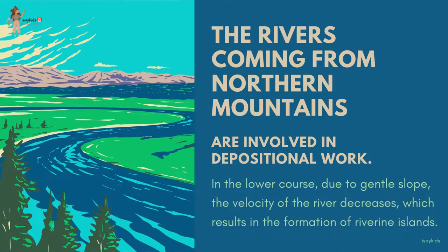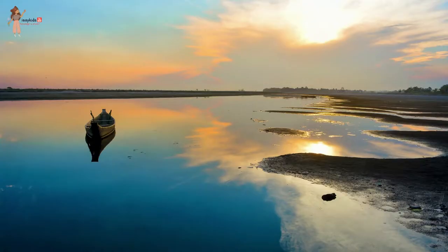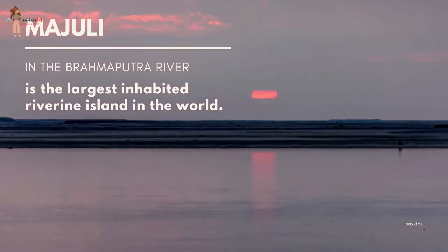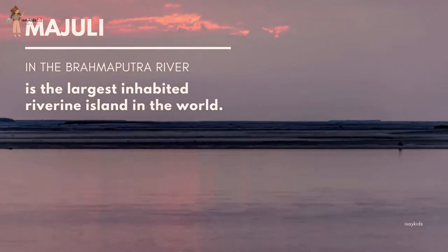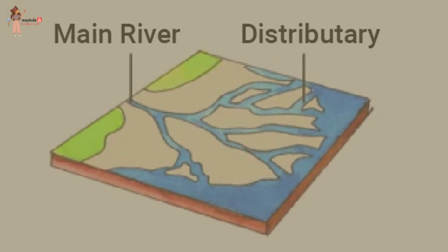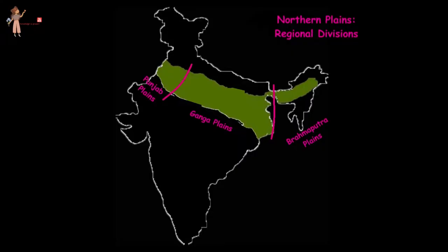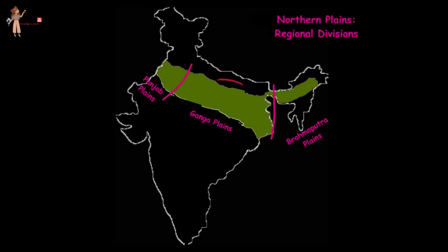Rivers coming from the northern mountains are involved in depositional work in the lower course. Due to the gentle slope, the velocity of the river decreases, resulting in the formation of riverine islands — landmasses formed within a river when rocks and mud are deposited by flowing rivers. The rivers in their lower course split into numerous channels due to silt deposition; these channels are known as distributaries. The northern plain is broadly divided into three sections: the western part referred to as the Punjab plains, the middle part as the Ganga plains, and the eastern part as the Brahmaputra plains.